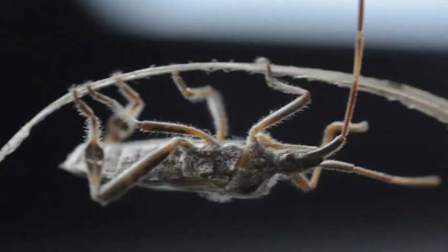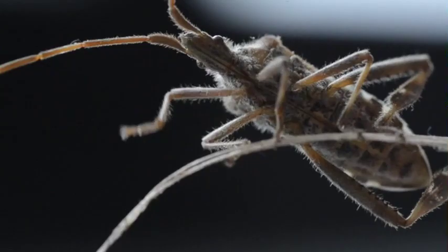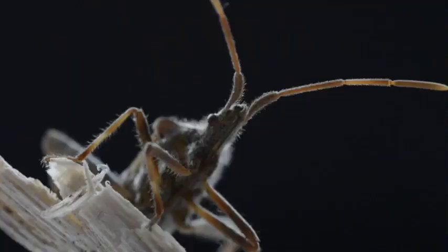Like all other Hemipterians, the Western Conifer Seed Bug has a long piercing mouth part called a beak. It uses this to pierce plants and suck out the sap within.